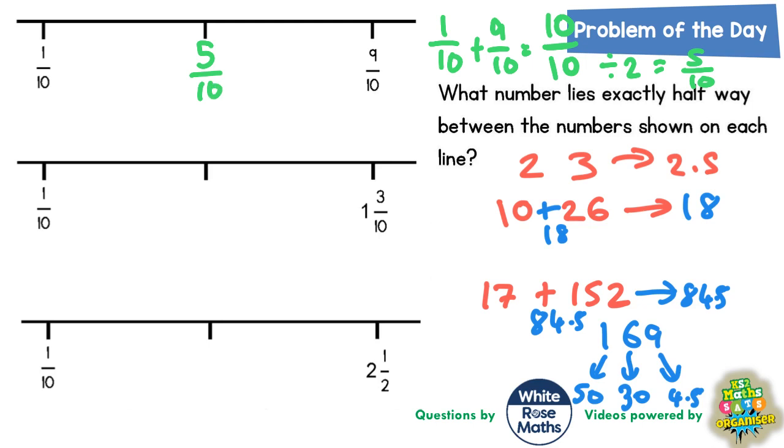If you think about it, that does make sense because the gap from 1 tenth up to 5 tenths is a gap of 4 tenths, and the gap from 5 tenths up to 9 tenths is also a gap of 4 tenths. So it makes sense that 5 tenths is in between.